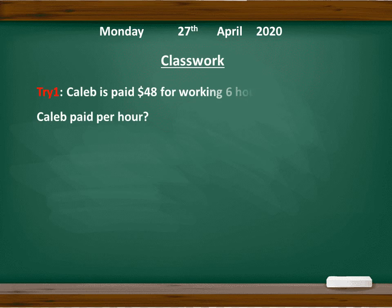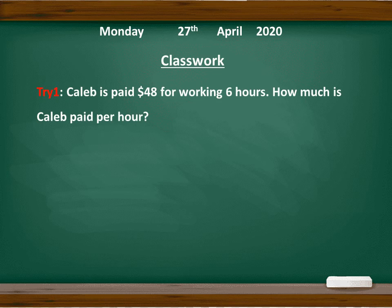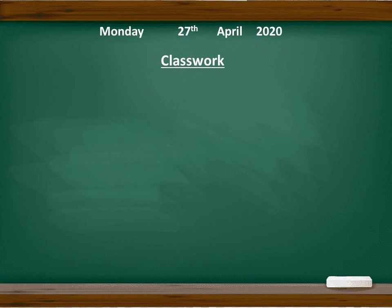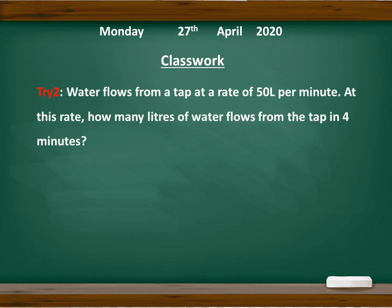I would like to explain before you complete this. Try one: Celeb is paid 48 dollars for working six hours. How much is Celeb paid per hour? Take note: 48 dollars is for six hours, and the question asks per hour, meaning one hour. So they're asking about rate. In six hours it is 48 dollars — can you find one hour? We find each one, so which operation do we choose?